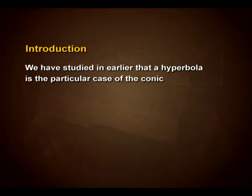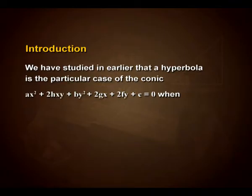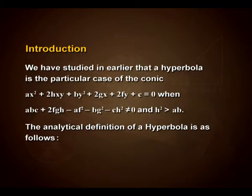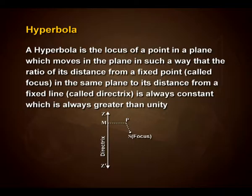We have studied in our earlier classes that hyperbola is the particular case of the conic ax² + 2hxy + by² + 2gx + 2fy + c = 0, when abc + 2fgh − af² − bg² − ch² is not equal to 0 and h² is greater than ab. The analytical definition of a hyperbola is as follows: a hyperbola is the locus of a point in a plane which moves such that the ratio of its distance from a fixed point called focus to its distance from a fixed line called directrix is always constant and always greater than unity.